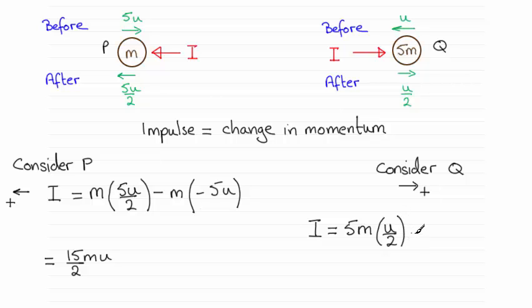And then we subtract from this the momentum before. So it's its mass, 5m, times the velocity. Speed is u, going to the left in the opposite sense to this, so the velocity would be negative u.